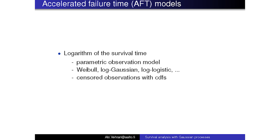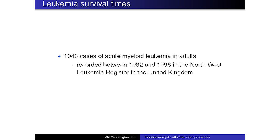I'll also briefly talk about accelerated failure time models, where the hazard function has a parametric form. There are some cases where there's so much uncertainty, noise, and variation in the data that we don't learn the hazard functions so well. In those cases we can use parametric forms, which makes computation slightly easier. There's a nice example — this is actually old data I picked from the internet — but I want to show it because it's a good example of the benefit of Gaussian processes for modeling covariate effects.